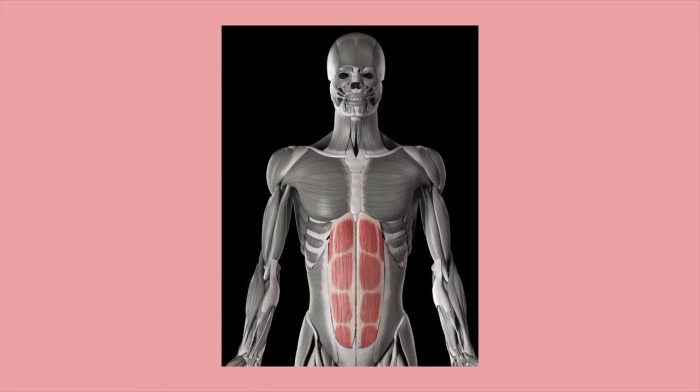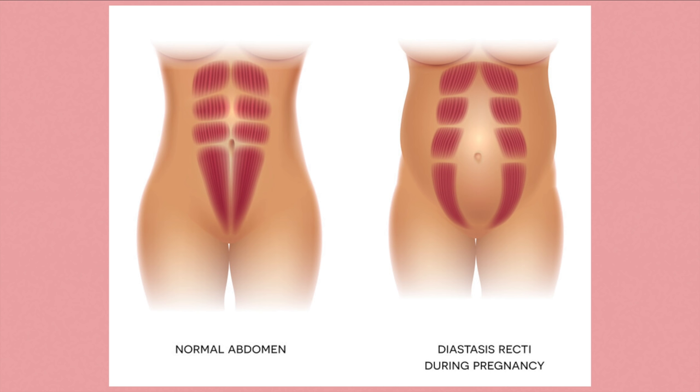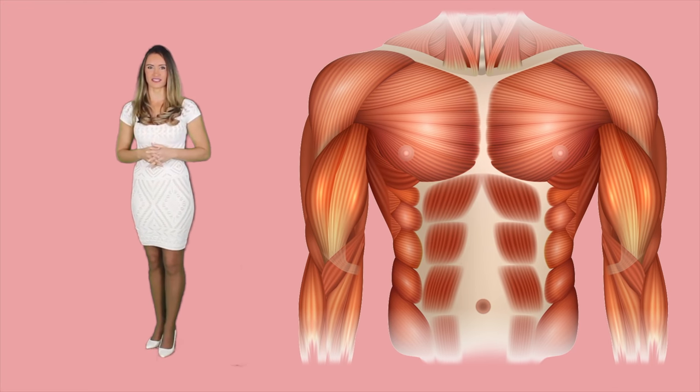In contrast to the thorax, the abdomen lacks muscular support laterally — meaning to the side — and anteriorly, meaning frontal. Instead, it has tough, flat muscles that link to the pelvic girdle, the vertebral column, and the rib cage. In order to provide attachment for the abdominal muscles, there is a connective tissue named linea alba that arises from the xiphoid process and runs anteriorly all the way to the pubic symphysis.